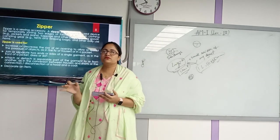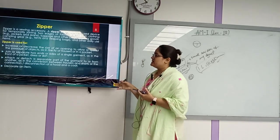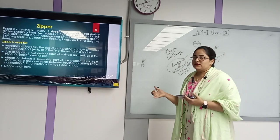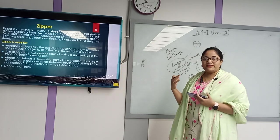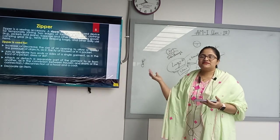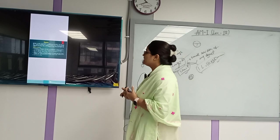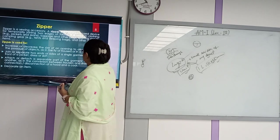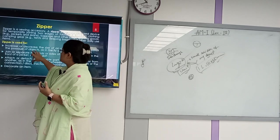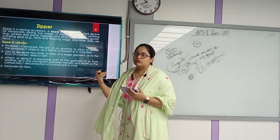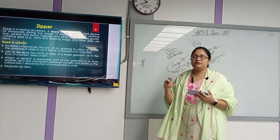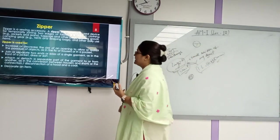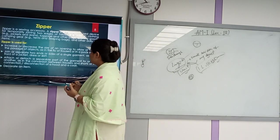The zipper serves the opening and closing purpose of the garment. This is the reason we use the zipper. Decorating purpose — the zipper will be used with the jacket and pen just for decoration purpose. The zipper will be used in the size of the opening, to allow or restrict the presence of objects. Meaning, if you have a zipper in the body, then the object will be closed in the body. So it joins and separates the two ends and the sides of a single garment.